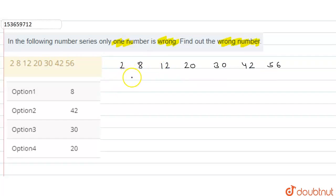So, 8 minus 2, how much will it be? Here, 6 will be. 12 minus 8, how much will it be? 4 difference will be. 20 minus 12, we have done here, how much will it be? 8 will be.